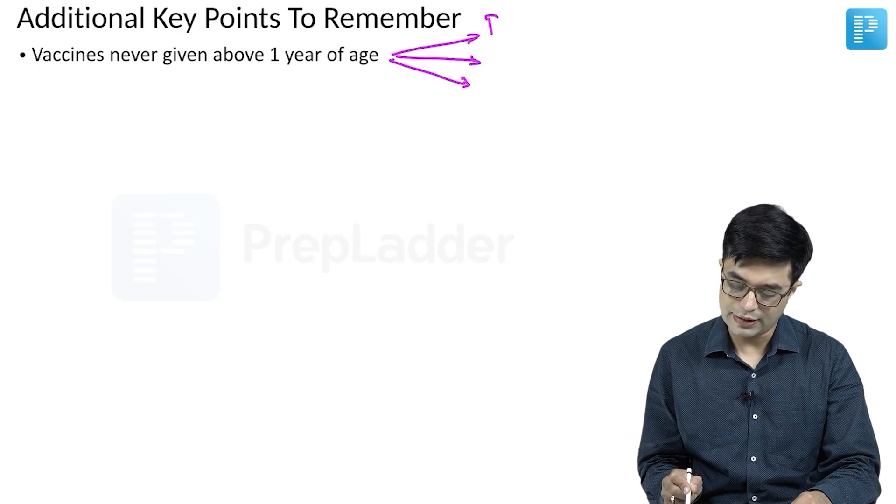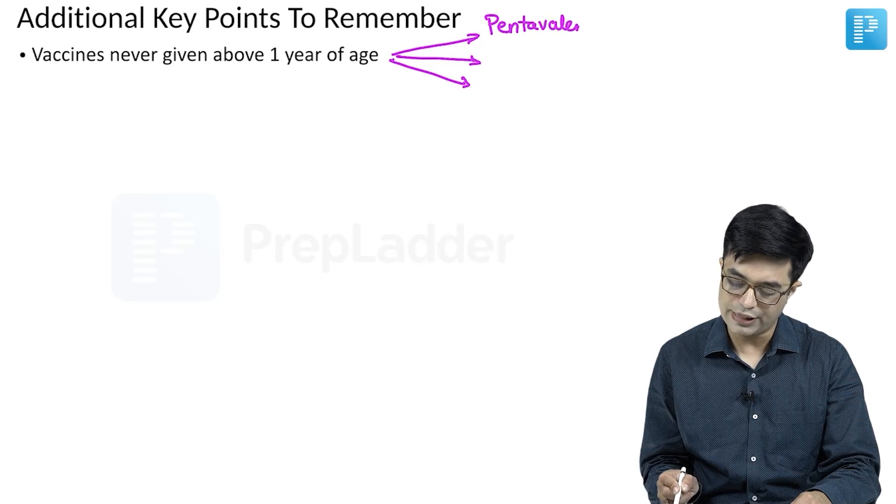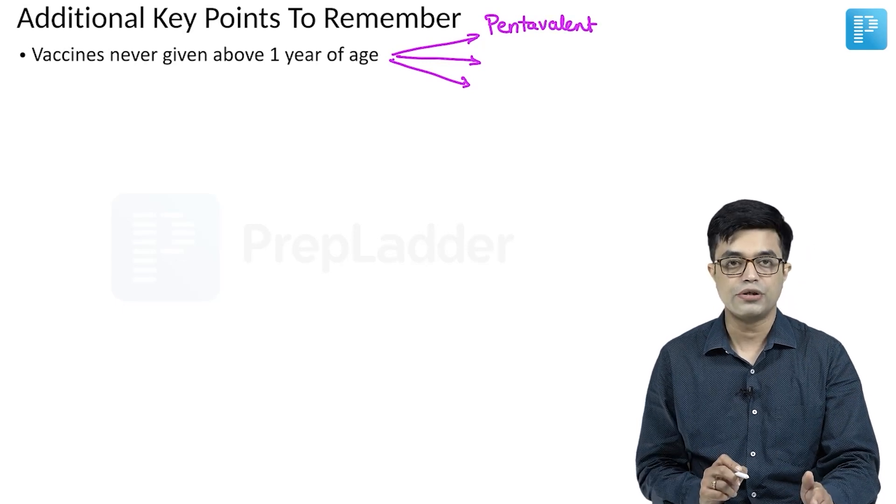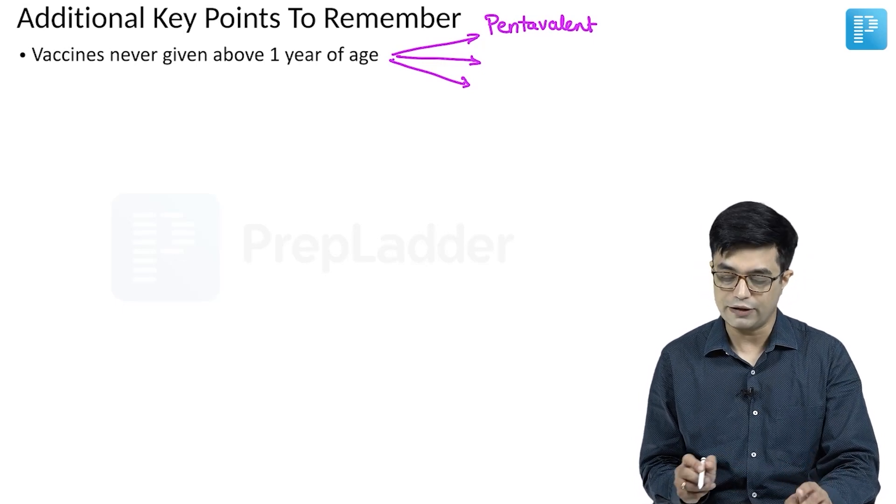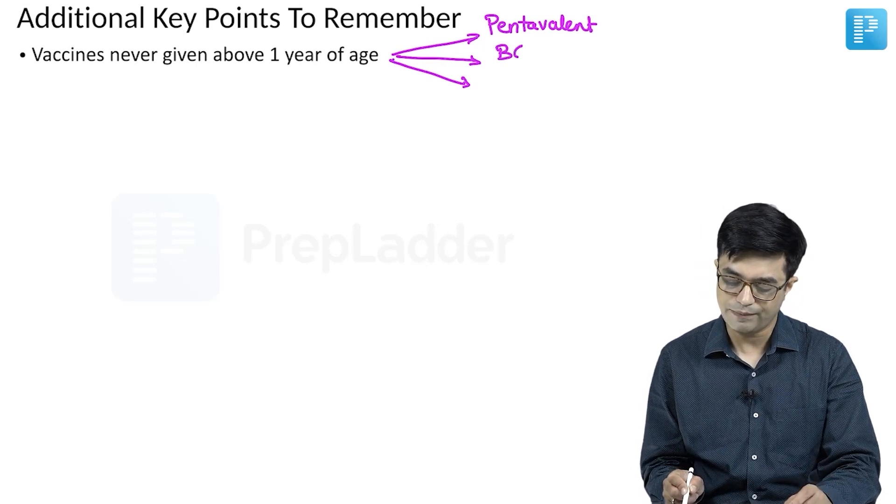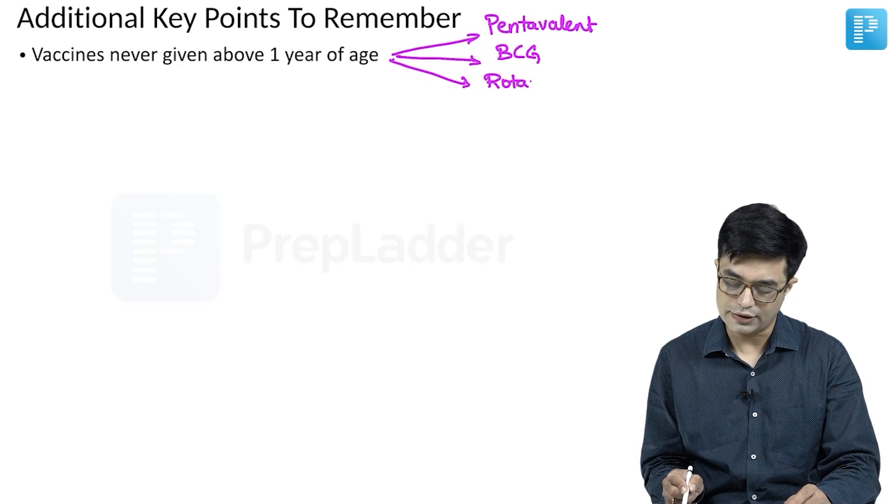First is pentavalent. Pentavalent will not be given above one year of age. You will use DPT booster but not pentavalent. Second is BCG, and third is rotavirus.